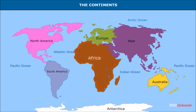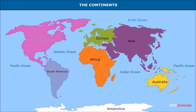The second largest continent is Africa; the equator runs almost halfway through this continent. North America is the world's third largest continent. The continents of North America and South America are linked by a narrow stretch of land across Panama, known as the Isthmus of Panama.